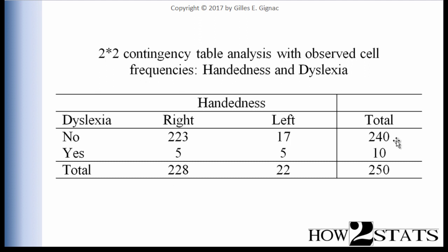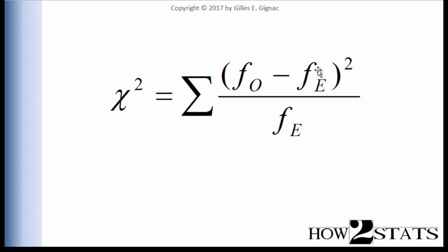On the other side of the table, we also have marginal cell frequencies. 240 did not have dyslexia, and 10 people did. In the corner of the marginal cell frequencies we have the total sample size, 250. These marginal cell frequencies are the basis for calculating the expected frequencies in a 2x2 or greater Pearson Chi-Square analysis.